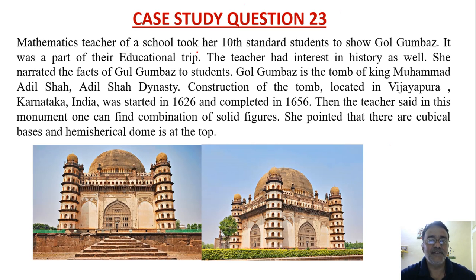Mathematics teacher of school took her 10th standard students to show Gol Gumbas. It was a part of their educational trip. The teacher had interest in history as well. She narrated the facts of Gol Gumbas to students. Gol Gumbas is the tomb of King Muhammad Adil Shah, Adil Shah dynasty. Construction of the tomb located in Vijayapura, Karnataka in India was started in 1626 and completed in 1656, 30 years.